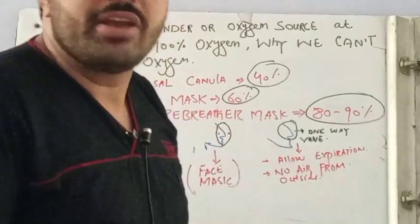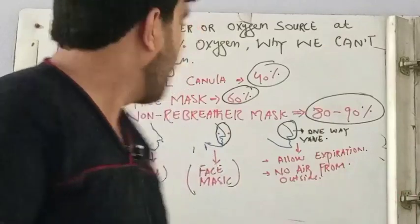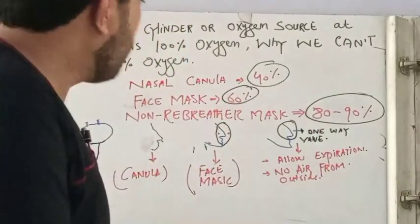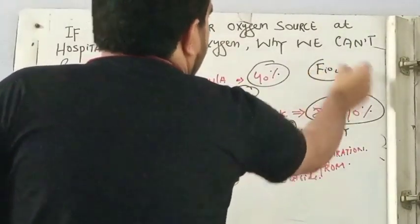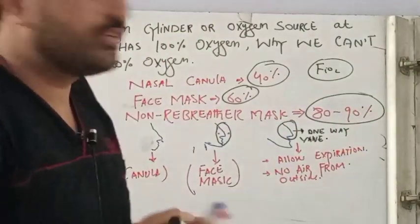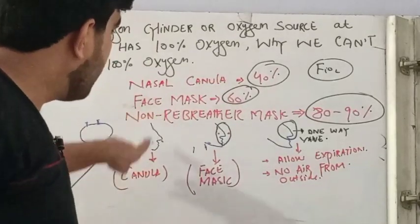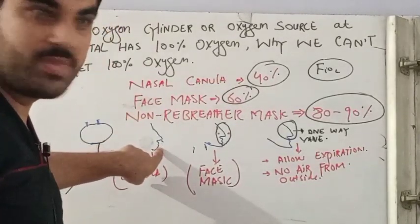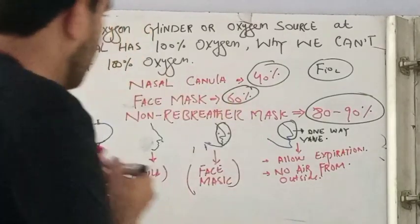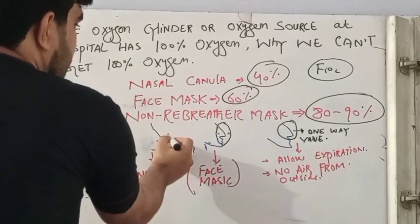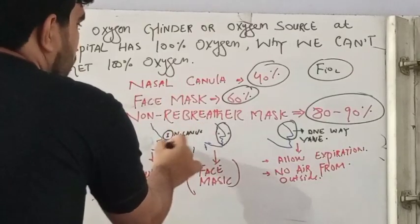Here we will give the reason why we can't get 100% oxygen from the cylinder. FiO2 — fraction of inspired oxygen — is the fraction of oxygen in the inspired air. Now, if we apply the nasal cannula to this patient, the person is inhaling from two sources: number one is the nasal cannula, and number two is the environment.